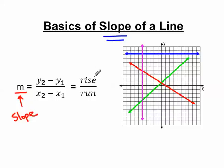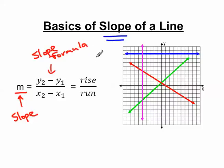There are two different ways of finding slope. One is this equation here: y2 minus y1 divided by x2 minus x1. This is the slope formula. There's another one which is called the rise over run formula. The point of this video is not to go over how to find slope using these equations — the point of this video is to discuss the concept behind slope.